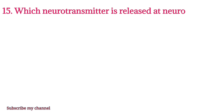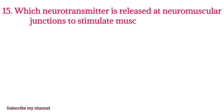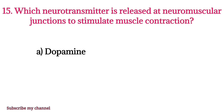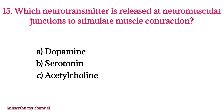MCQ number fifteen: Which neurotransmitter is released at the neuromuscular junction to stimulate muscle contraction? Option A: dopamine, option B: serotonin, option C: acetylcholine, option D: glutamate. The right option is option C.